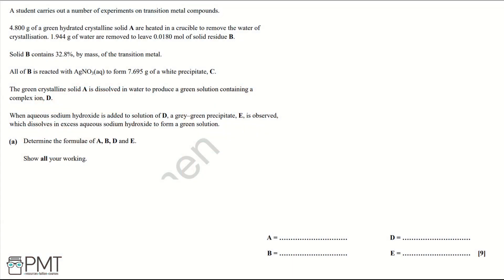A student carries out a number of experiments on transition metal compounds. 4.800 grams of a green, hydrated, crystalline solid A are heated in a crucible to remove the water of crystallisation. 1.944 grams of water are removed to leave 0.0180 moles of solid residue B. Solid B contains 32.8% by mass of the transition metal. All of B is reacted with silver nitrate to form 7.695 grams of a white precipitate C. The green crystalline solid A is dissolved in water to produce a green solution containing a complex ion D.